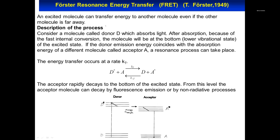In resonance energy transfer, we have a donor that is excited, which then transfers energy to an acceptor. The acceptor will be excited with rate KT, which is the transfer energy. The back-transfer can only occur if the energy of the acceptor equals the energy of the donor, which happens only with homoFRET or similar processes.